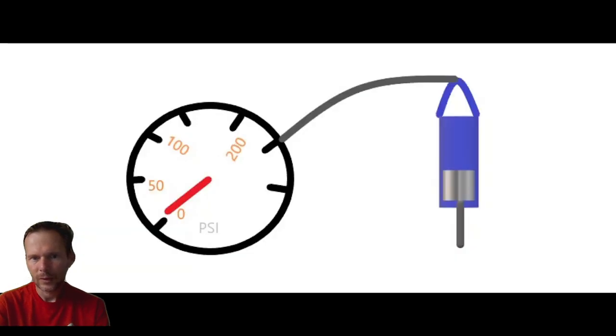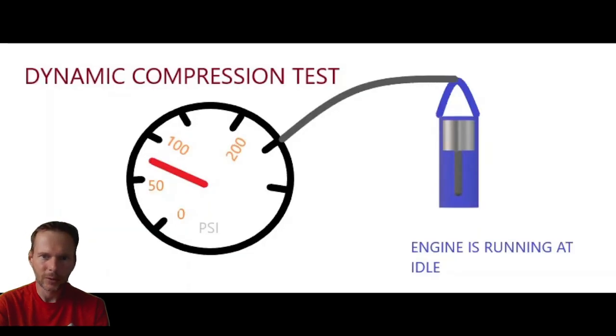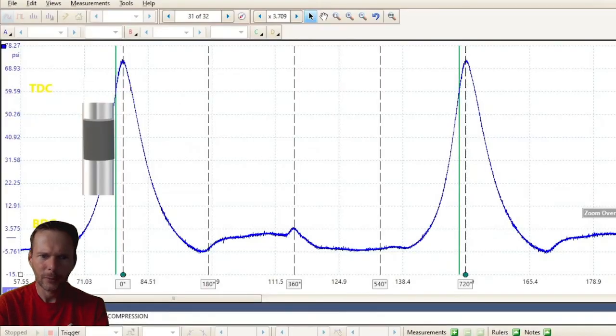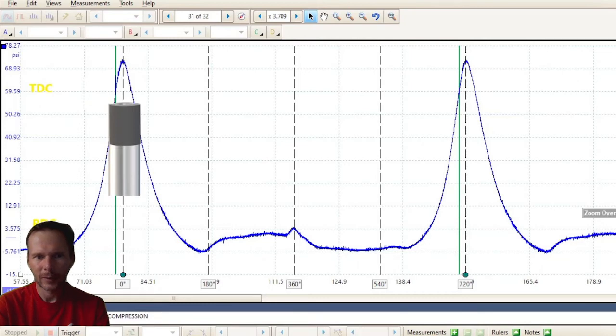So this is what a traditional compression gauge would look like on the same test running at idle. About 50% of your cranking compression.